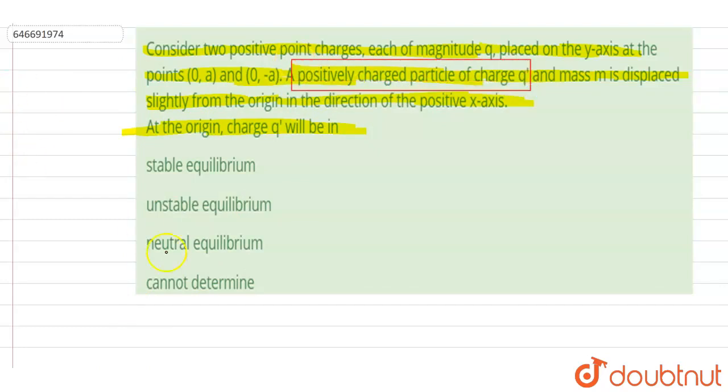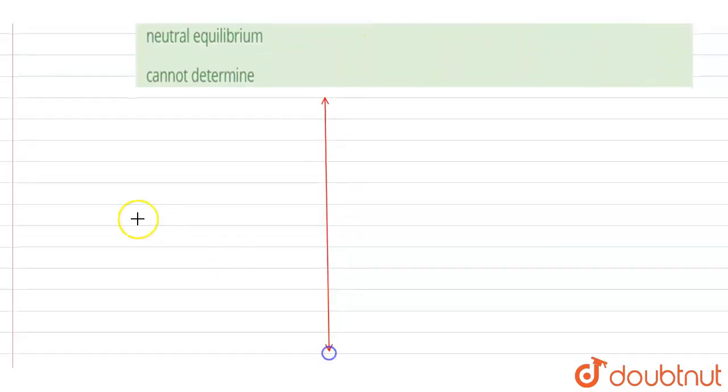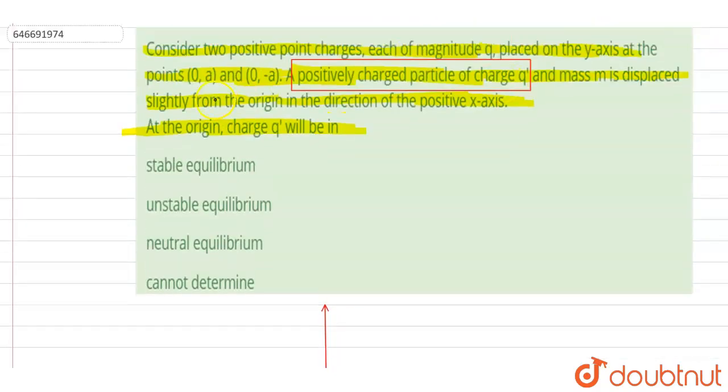So if you see here, if I say this is the y-axis and this is the x-axis, these are the two charges kept at (0, a) and (0, -a), right? q charge is kept here.